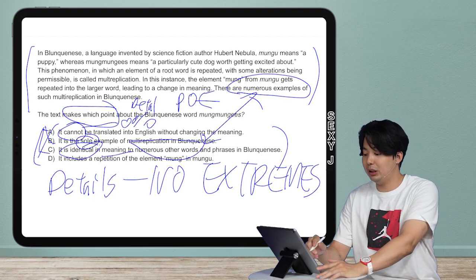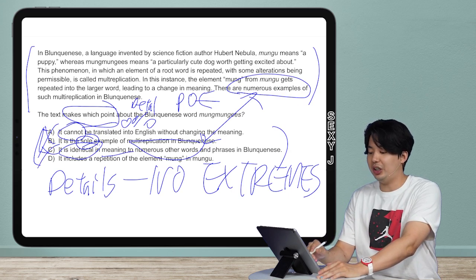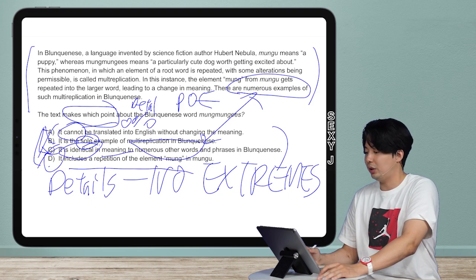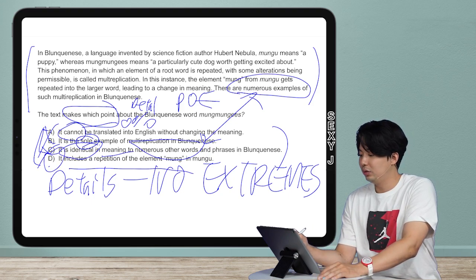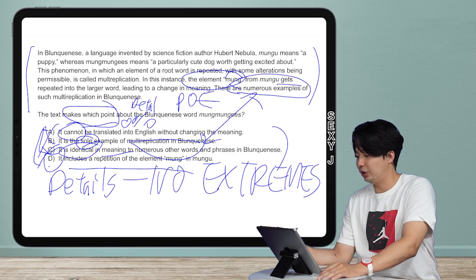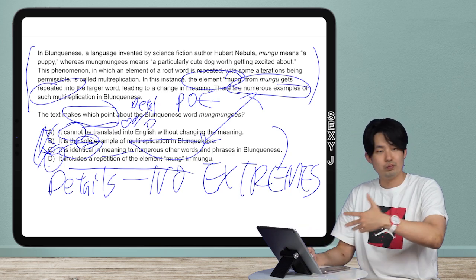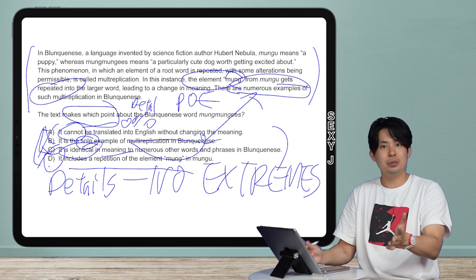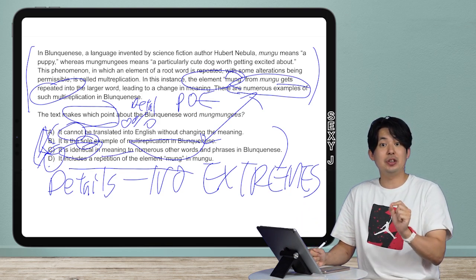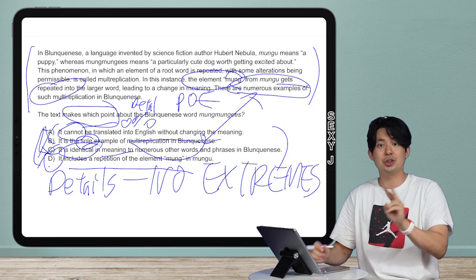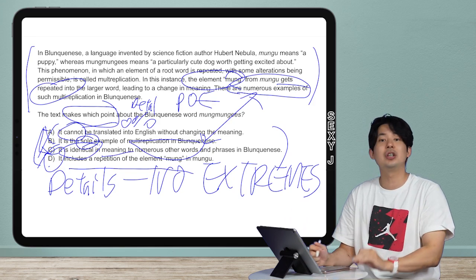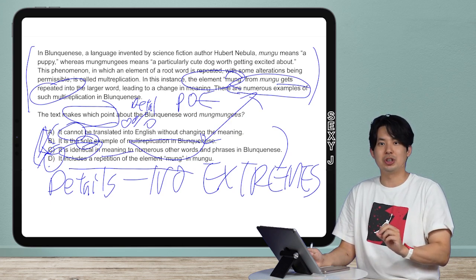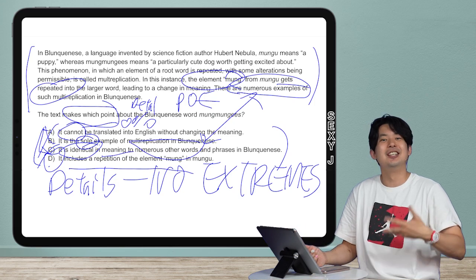So the answer here is D: it includes repetition of the element 'mung,' because the element 'mung' gets repeated. That was it, right? And as you guys have noticed from the pattern, hopefully you guys are clever people, the evidence is most likely to come from the last two sentences of the text. And in this case, it was the second to last sentence. Vocab of the day: second to last, the vocab is 'penultimate.' Am I going to use that word again? No, because it doesn't come up on the SAT, but I just want to talk about words because I like words.